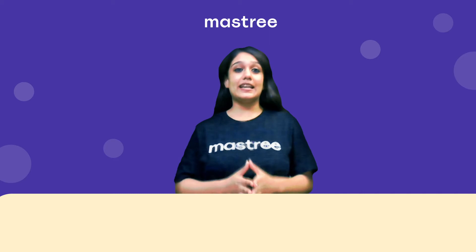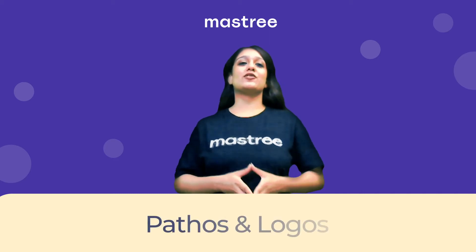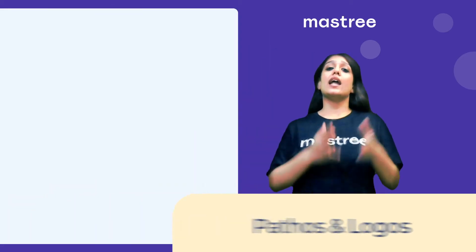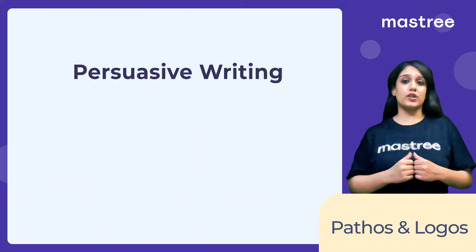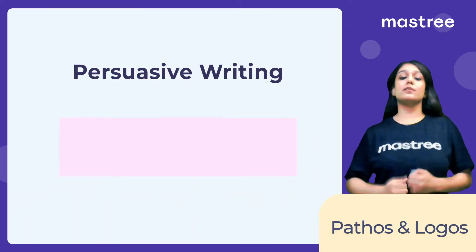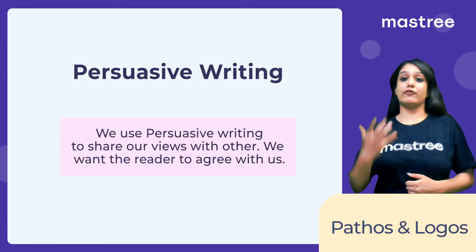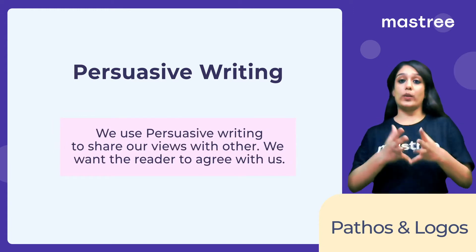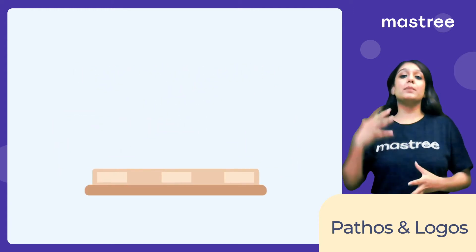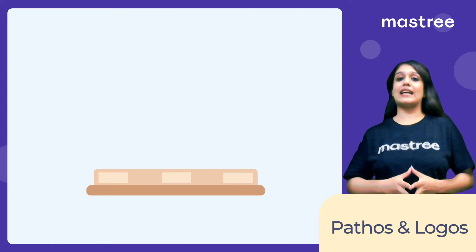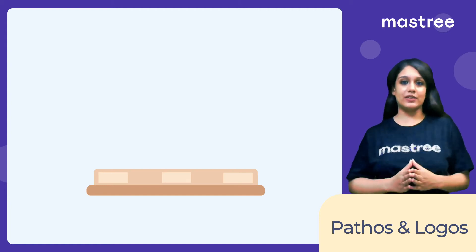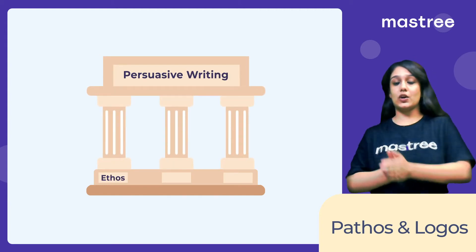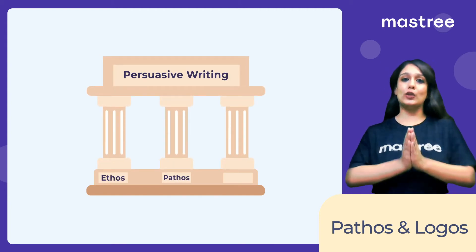Hello everybody and welcome to Mastery's English Pro Channel. In the previous video, we learned about persuasive writing and its importance in our life. We saw that persuasive writing has three pillars: Ethos, Pathos, and Logos.